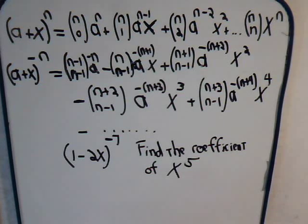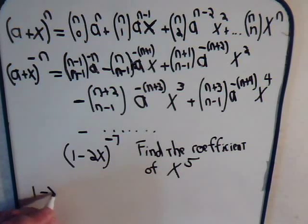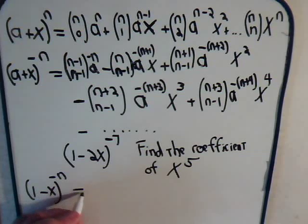So, if we have, say, (1 - x) to the minus n, what would be the general formula?